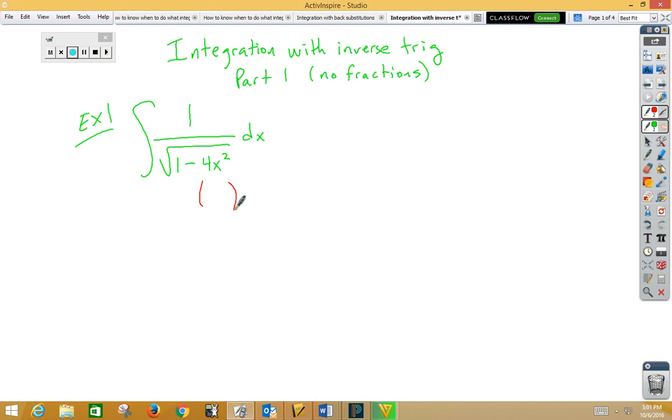First thing we want to do is we want to look at what might go inside of there. Well, to get the 4x squared, we would need to do 2x times 2x, or 2x squared. Inside function, u is 2x, du is 2 dx.